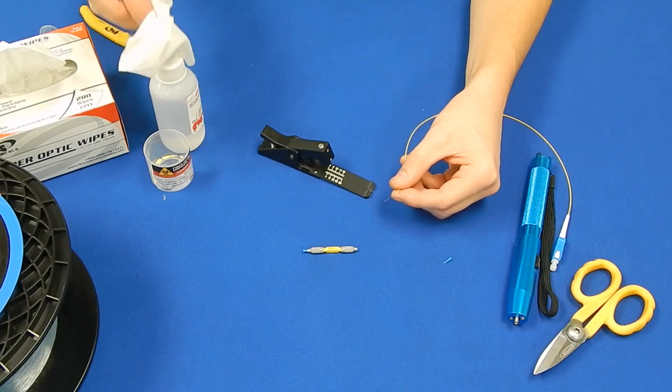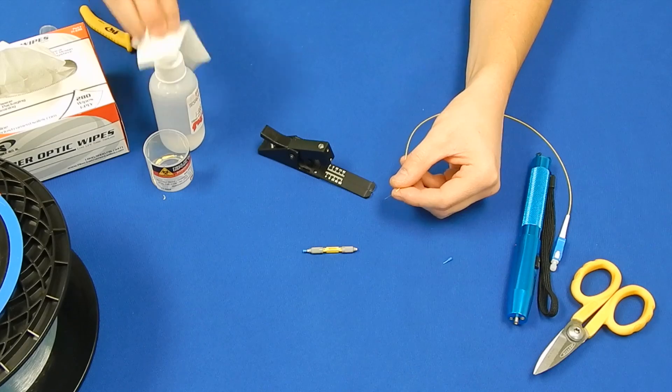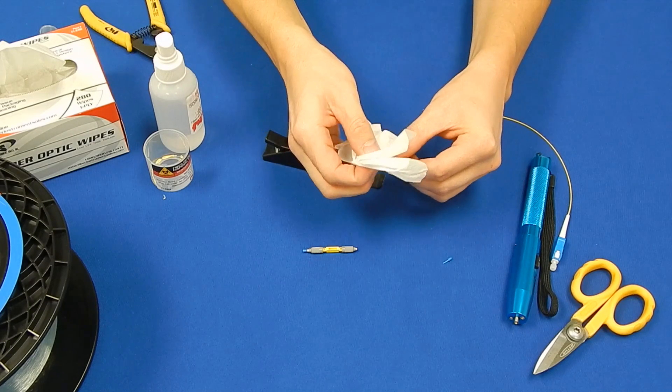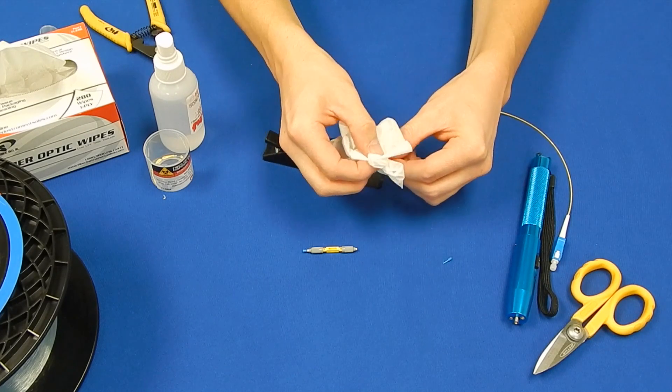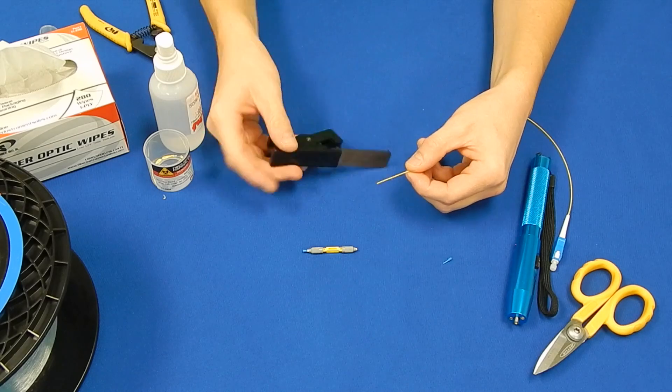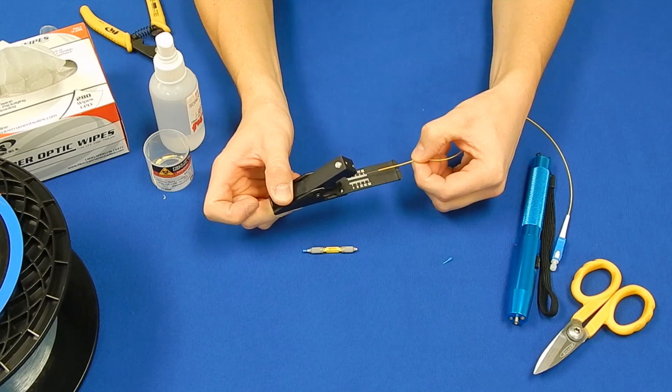Wipe the fiber clean with cleaning solution and wipe before cleaving. Using the field cleaver, cleave the fiber to 7mm as shown.